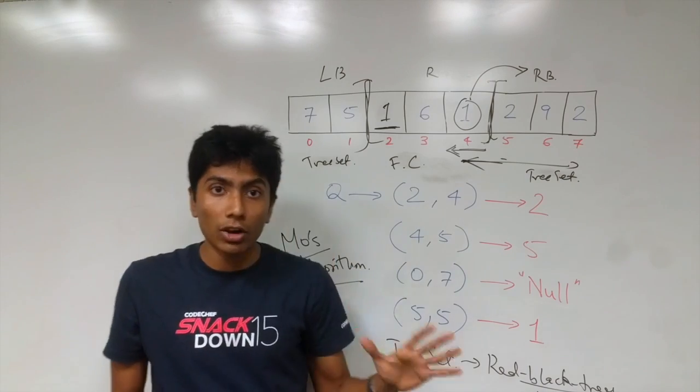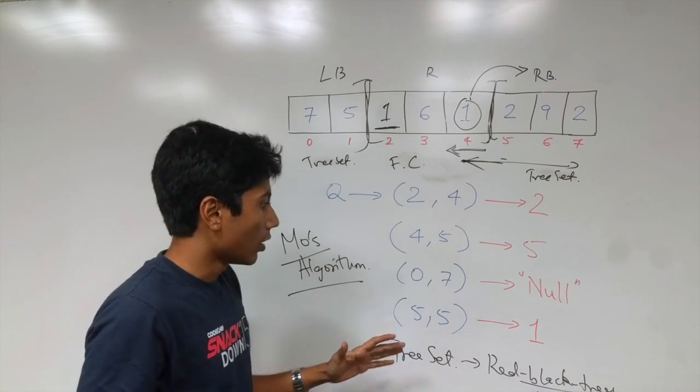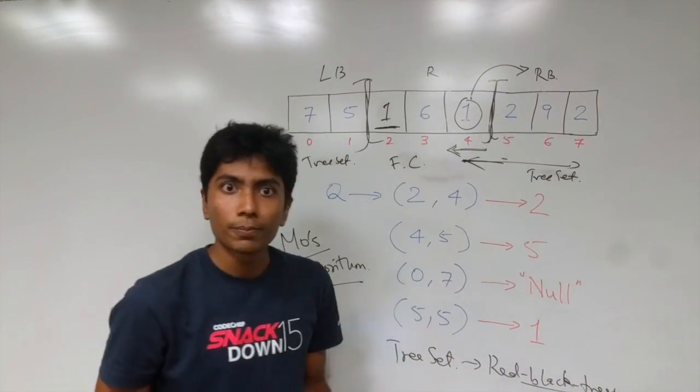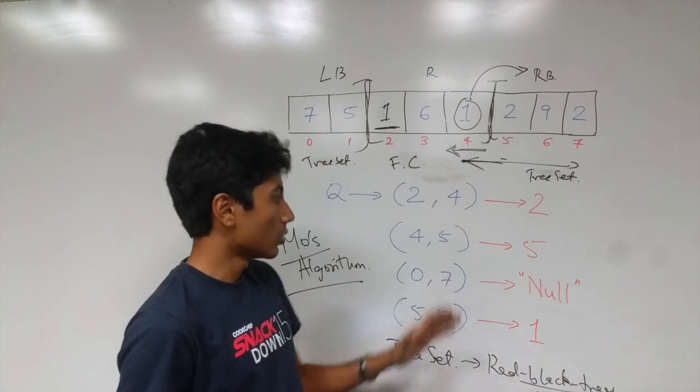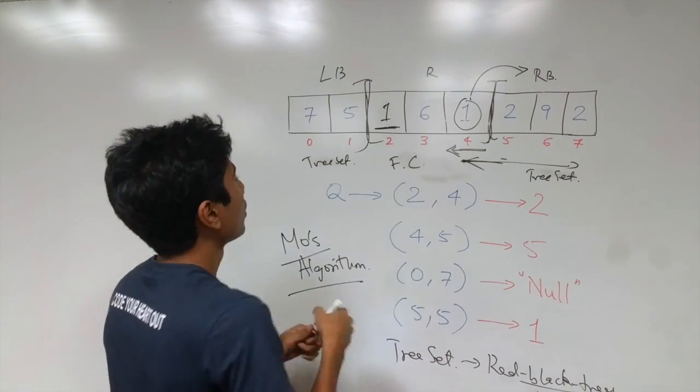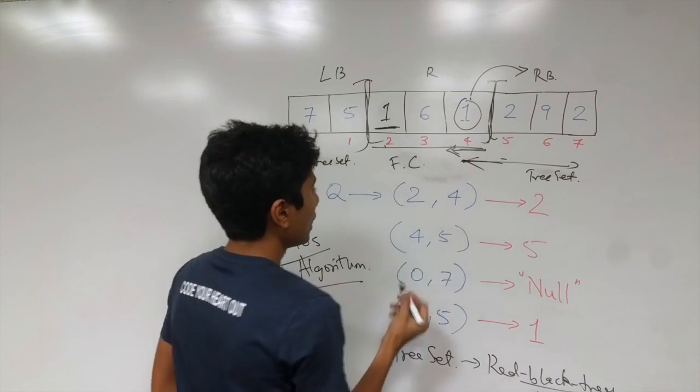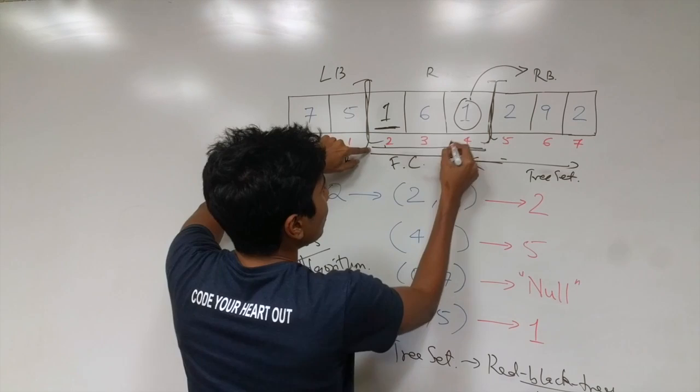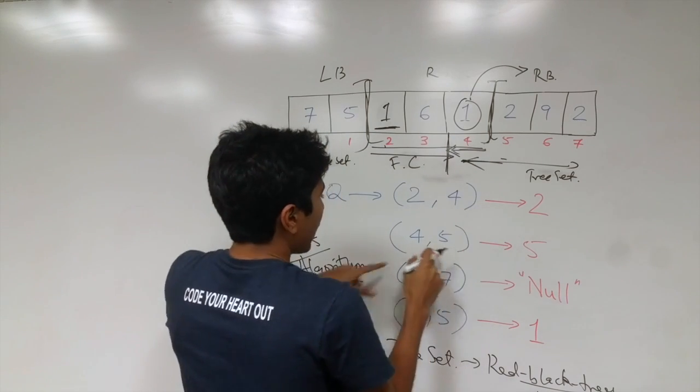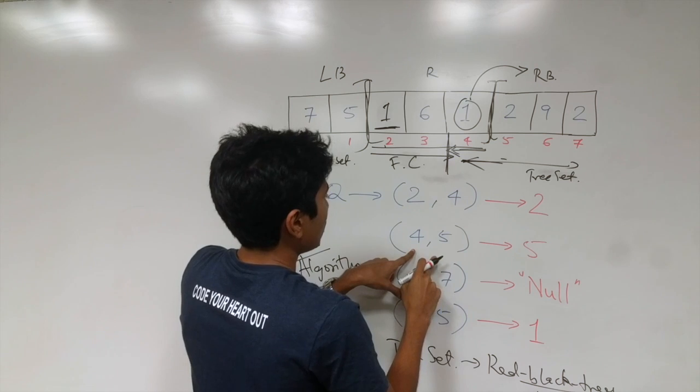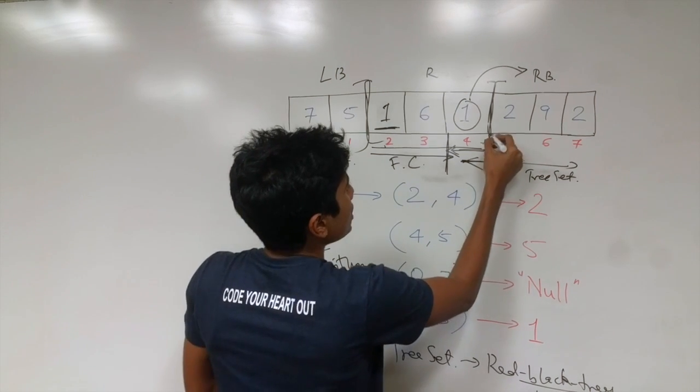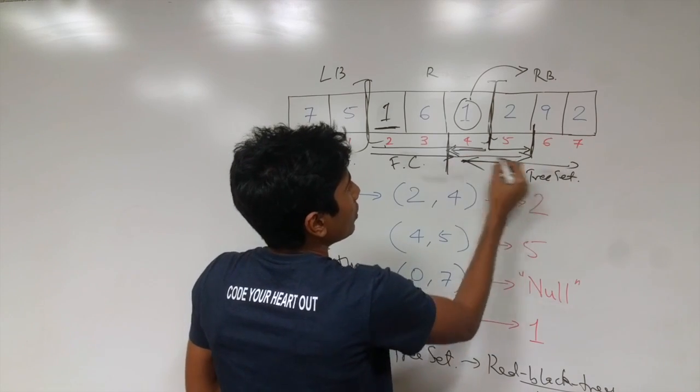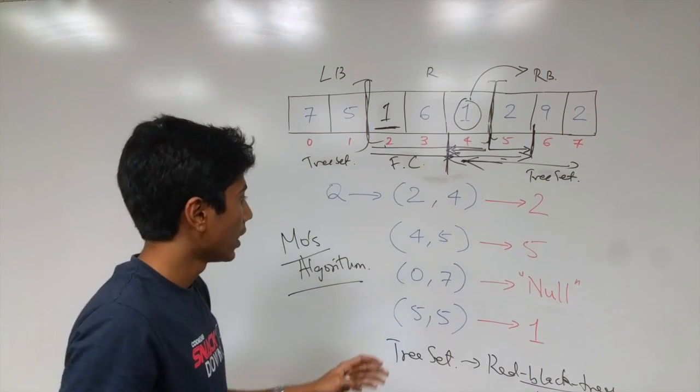Make sure that you have the Mo's algorithm thing clear in your mind because for every query, your left and right ranges will be changing. Initially you will be at 2, 4 over here. Then at 4, 5 what's going to happen is your left pointer is going to move all the way here to this point. And your right pointer is going to go to 5. So this pointer here is going to go over here. And your new range will be 4 to 5.